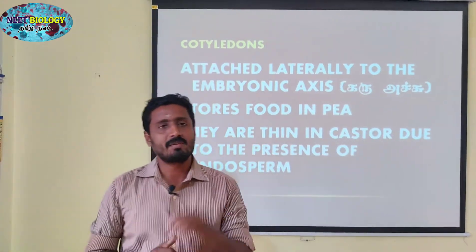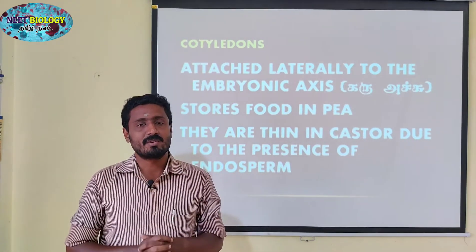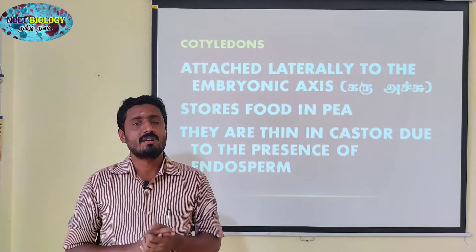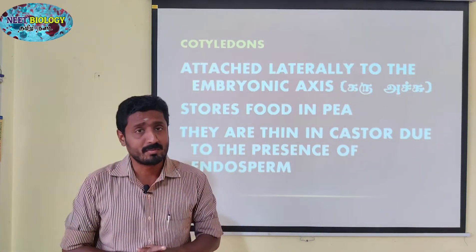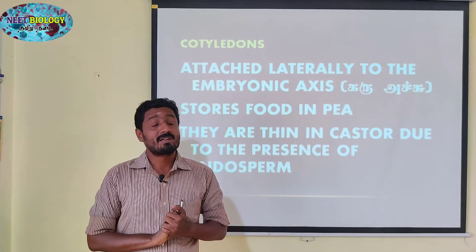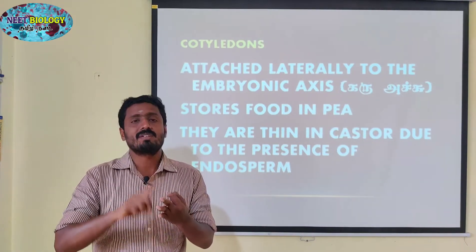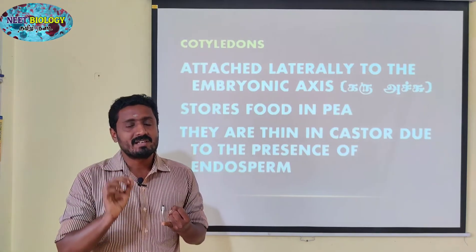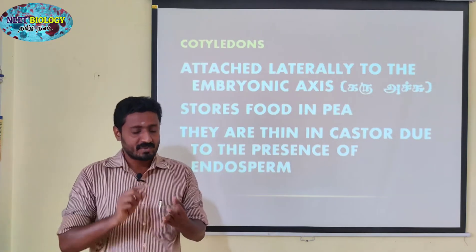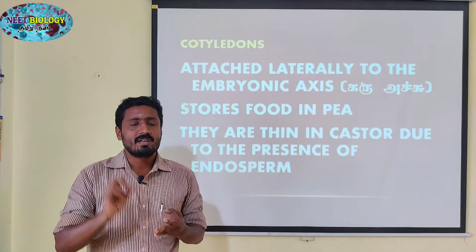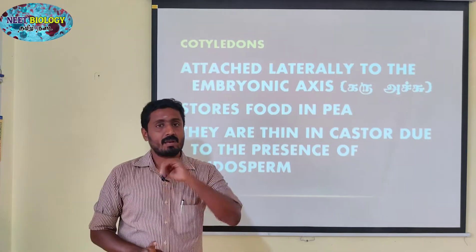This is the embryo type. In the embryo, there is a cotyledon. I have found 3 types. If you look at the seed, you can see the embryo type, and there are 3 parts: cotyledon, plumule, and radicle. The plumule is the shoot tip, and the radicle is the root tip.